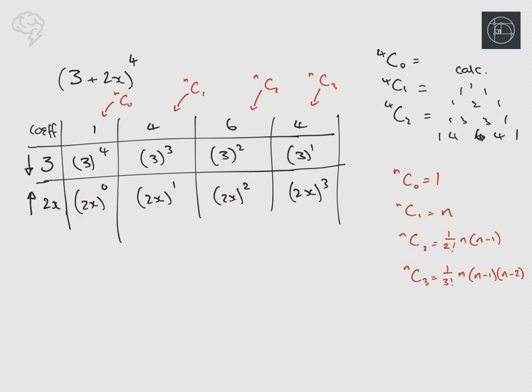Now we just multiply these rows together — multiply these together, these together, these together, these together — and that is the answer. For first years you're probably thinking that's more or less what I do, and that's true. But for second years, it's exactly the same method and it's going to be way easier than what you probably got taught. The first term is one times three to the four times (2x)^0, and anything to the zero is one.